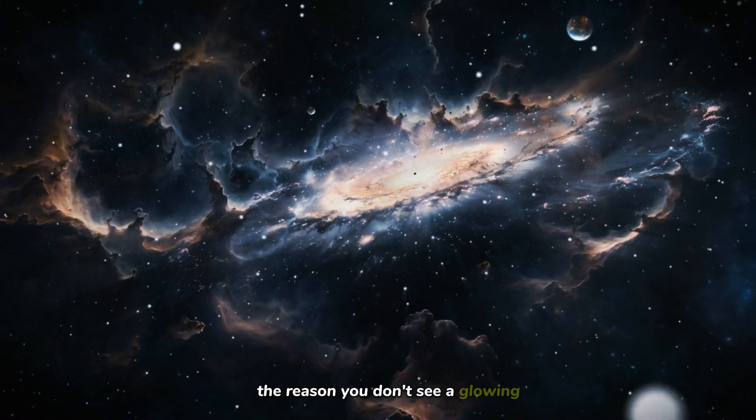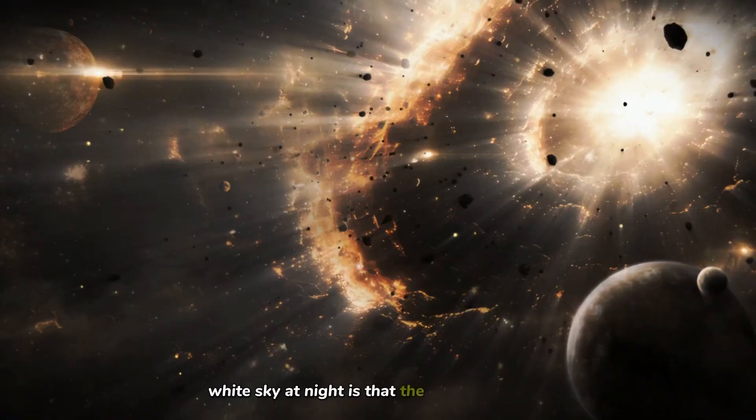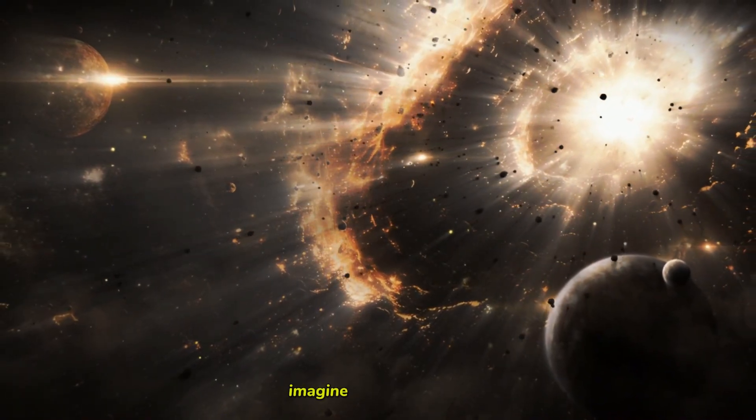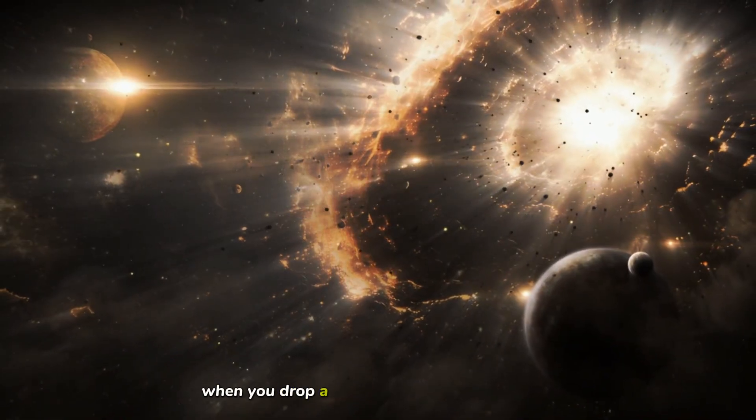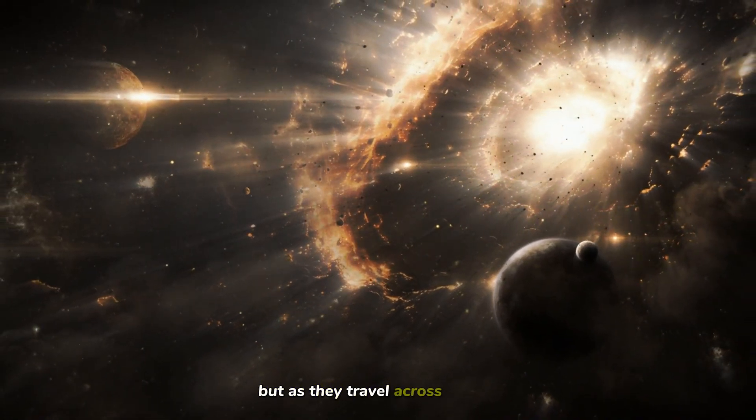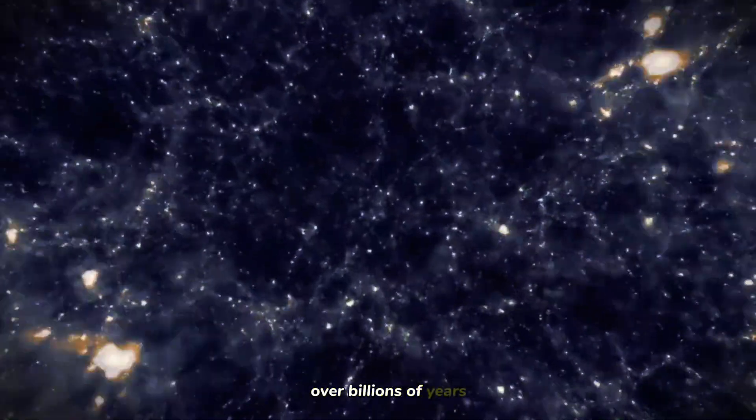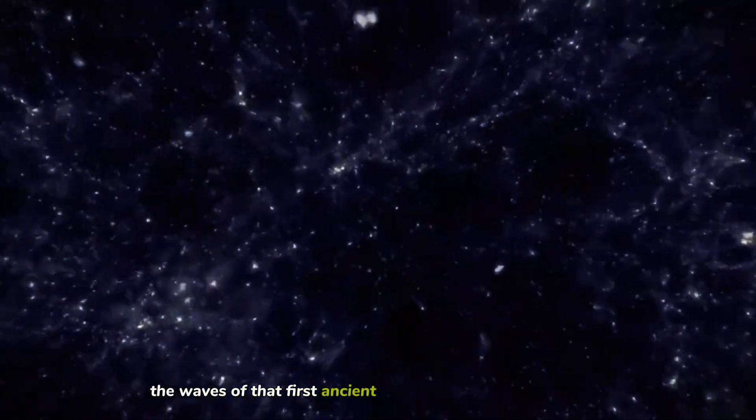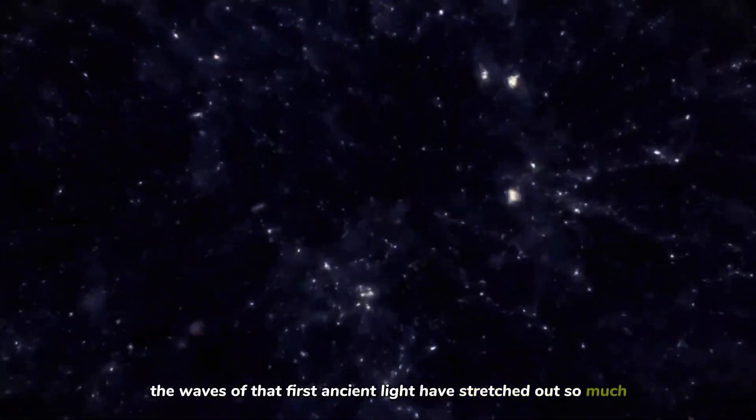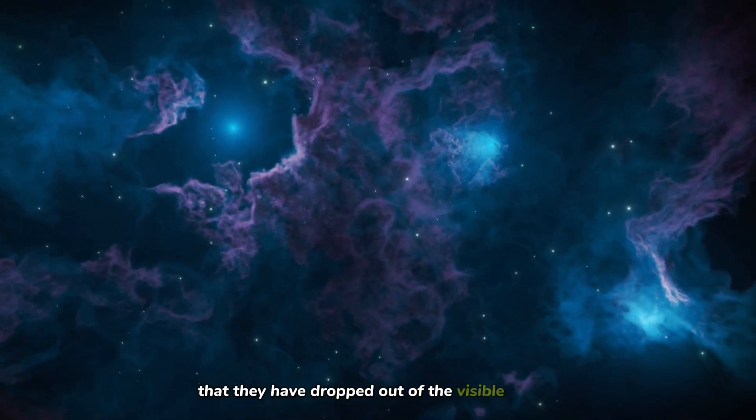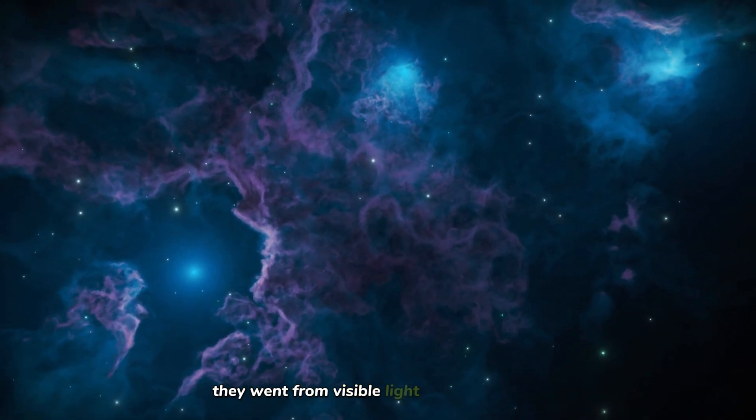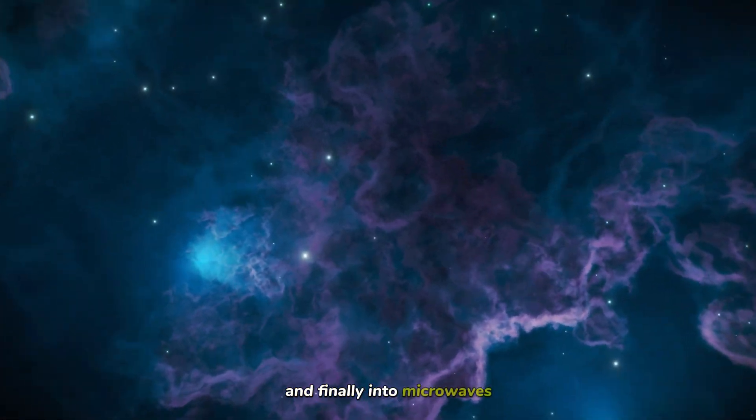The reason you don't see a glowing white sky at night is that the light has stretched. Imagine a ripple on a pond. When you drop a rock, the waves are tight and tall. But as they travel across the water, they flatten out. Light behaves the same way. Over billions of years, the waves of that first ancient light have stretched out so much that they have dropped out of the visible spectrum. They went from visible light down into infrared and finally into microwaves.